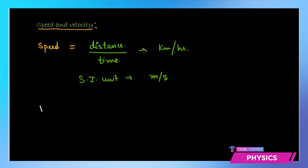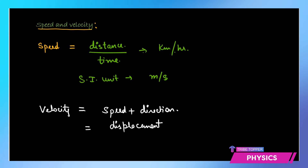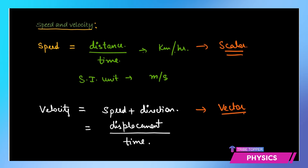Just as there is a difference between distance and displacement, there is a difference between speed and velocity. In layman's terms they may seem the same, but in physics, velocity is speed plus direction. Velocity is a vector quantity — it is displacement over time. Speed is a scalar quantity because both distance and time are scalars, but velocity is a vector because it depends on displacement. Therefore, velocity can be positive, negative, or zero.